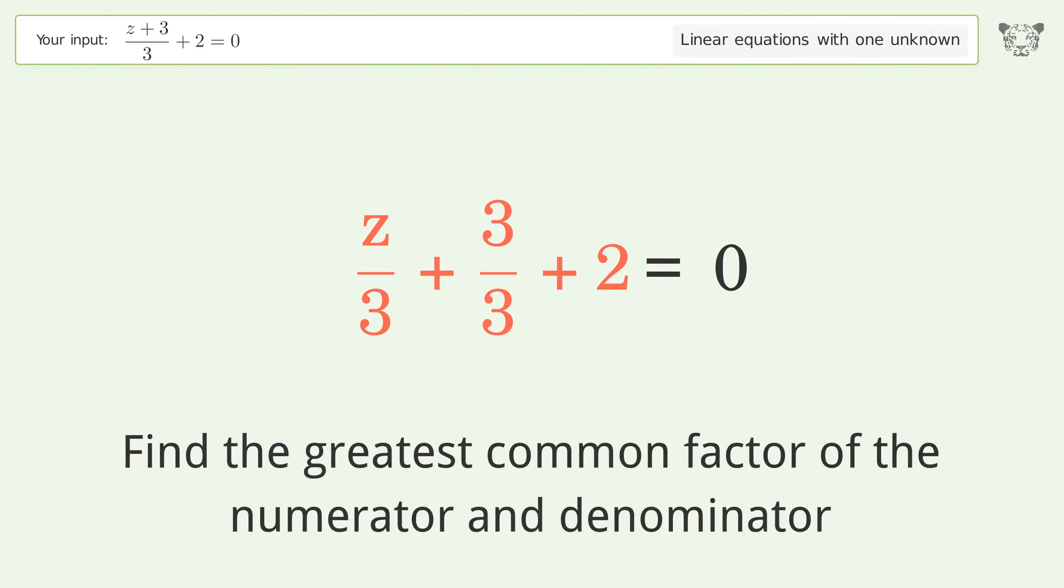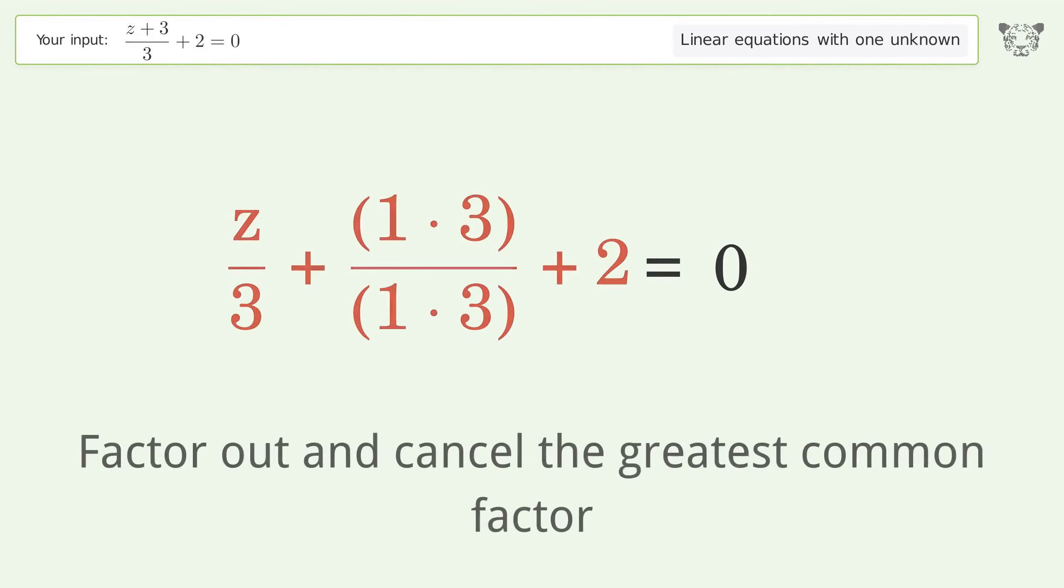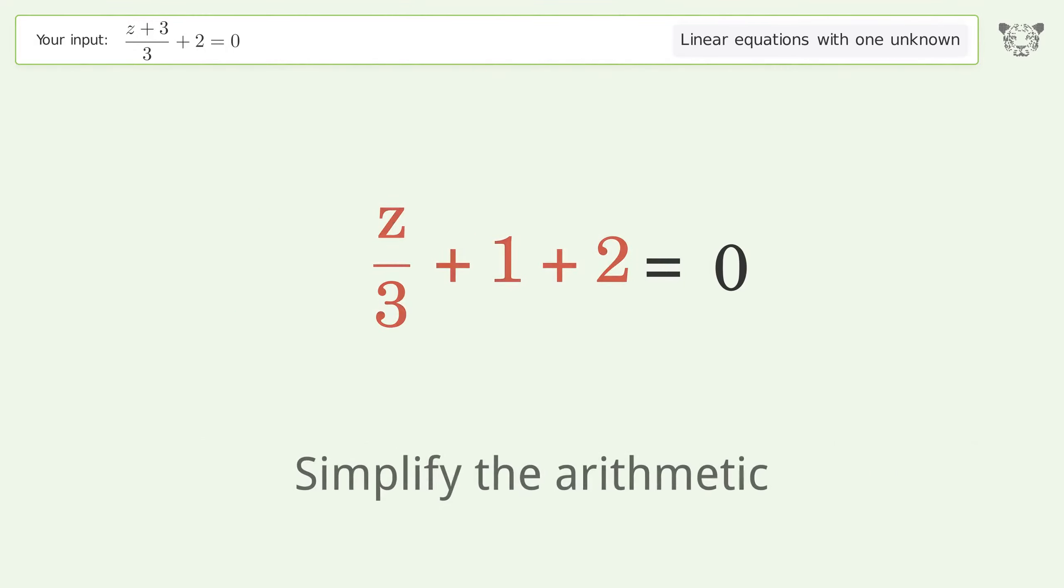Find the greatest common factor of the numerator and denominator. Factor out and cancel the greatest common factor. Simplify the arithmetic.